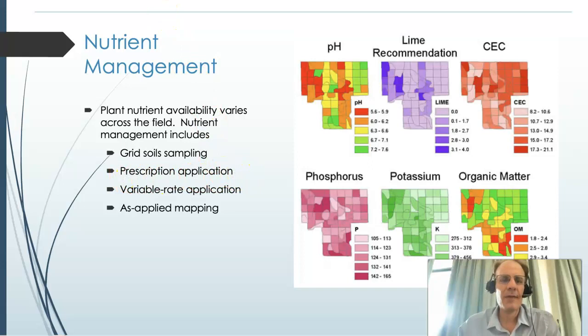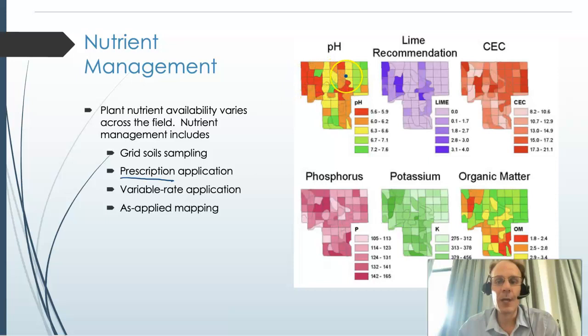Think of prescription applications similar to prescription drugs. When you go to the doctor, the doctor prescribes medication for you to get better. Similarly, a crop consultant will use the grid soil samples to create a prescription for your field, giving the amount of fertilizer to be applied at different locations. Variable rate application is when we go into the field and apply that fertilizer, lime, or other chemicals according to that prescription map.